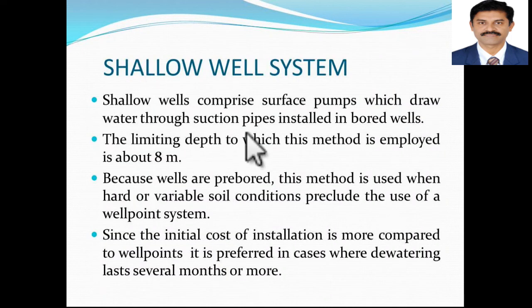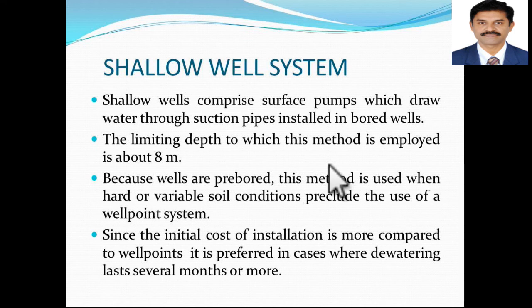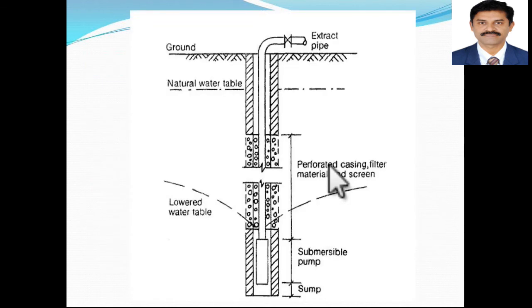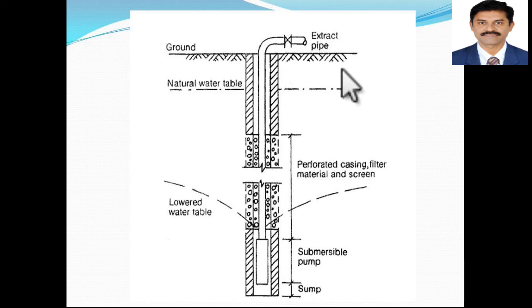The shallow well system comprises surface pumps which draw water through suction pipes installed in bored wells. This is used for draining water from shallow depth. Deep wells are used mainly for depths greater than 8 meters. Bore holes are sunk into the ground and water is drawn out using different wells. You can see in the schematic that water is drawn out, lowering the initial natural water table to a reduced level.